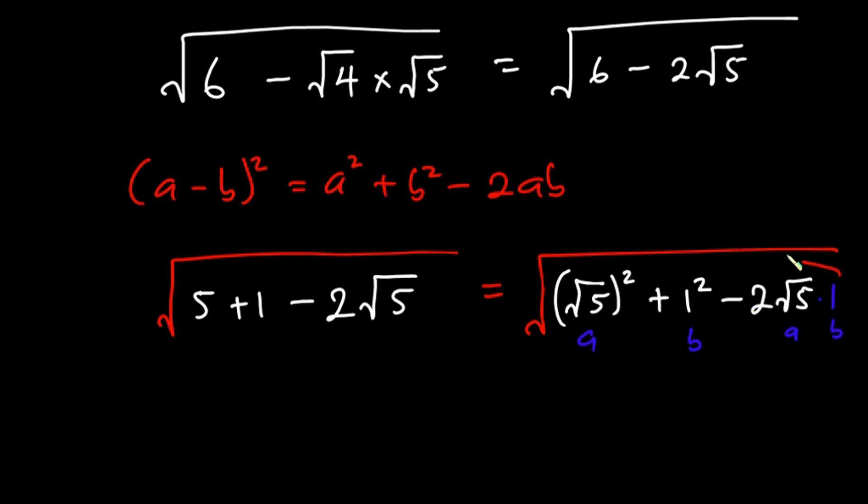Now you can see we can write this whole thing in the form (a minus b) all squared. So we have a to be square root of 5 and b is 1, then all squared. And remember we still have our big square root.